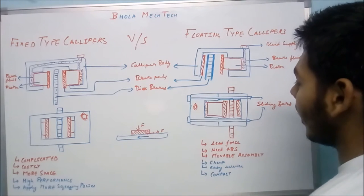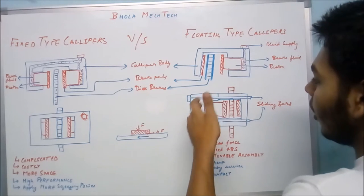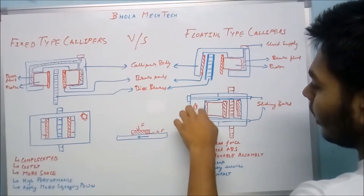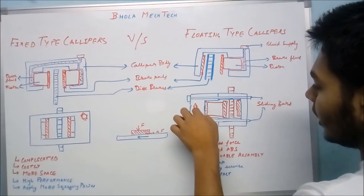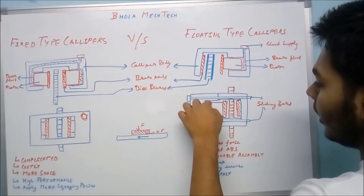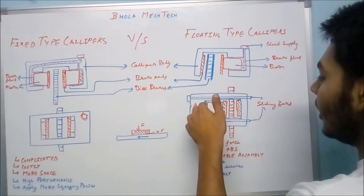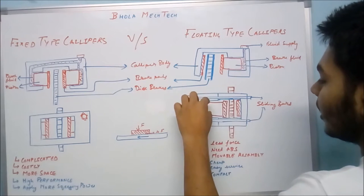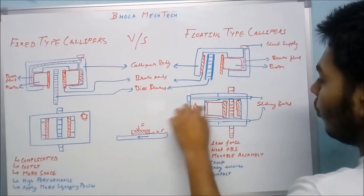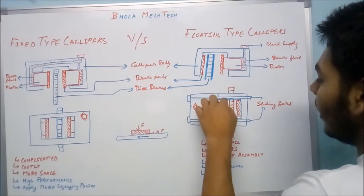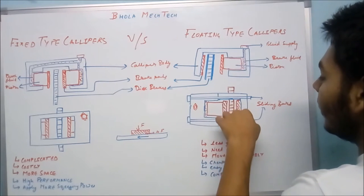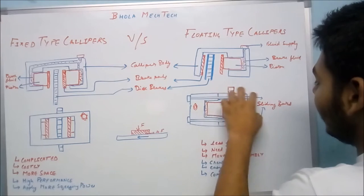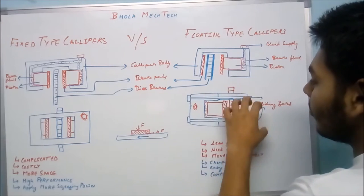This is the top view of the floating caliper. This is the inlet for the pressurized fluid, there are some cavities, and after that there is the cavity of the piston so that the piston can move inside. These are the pads, this is the disc, and these are the sliding bars on which the whole floating type caliper will move.